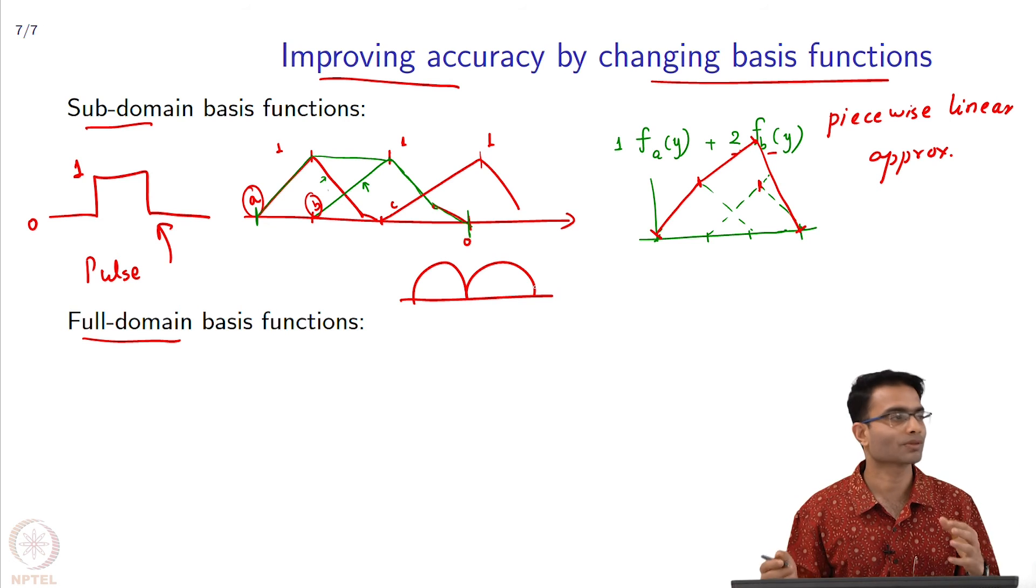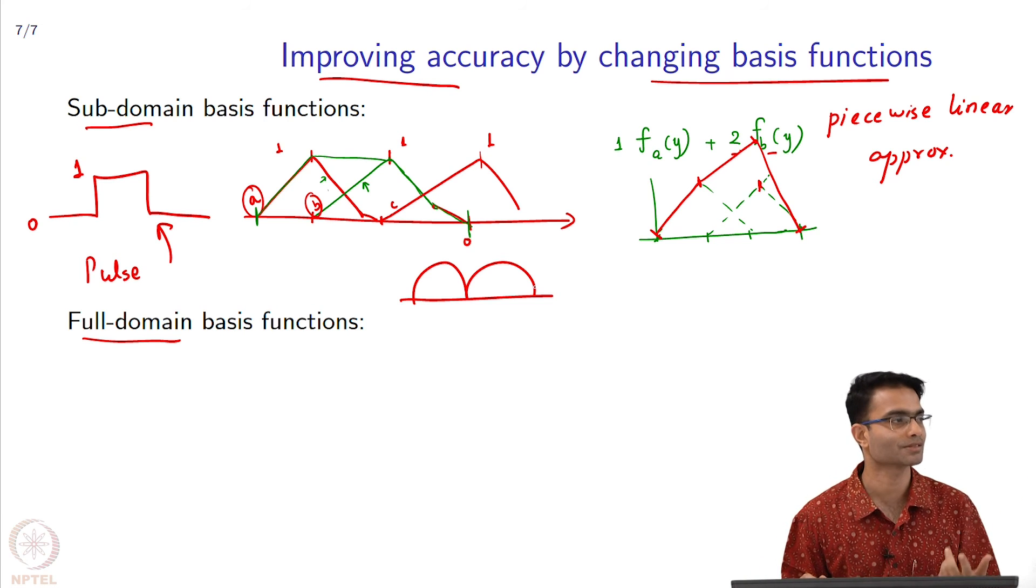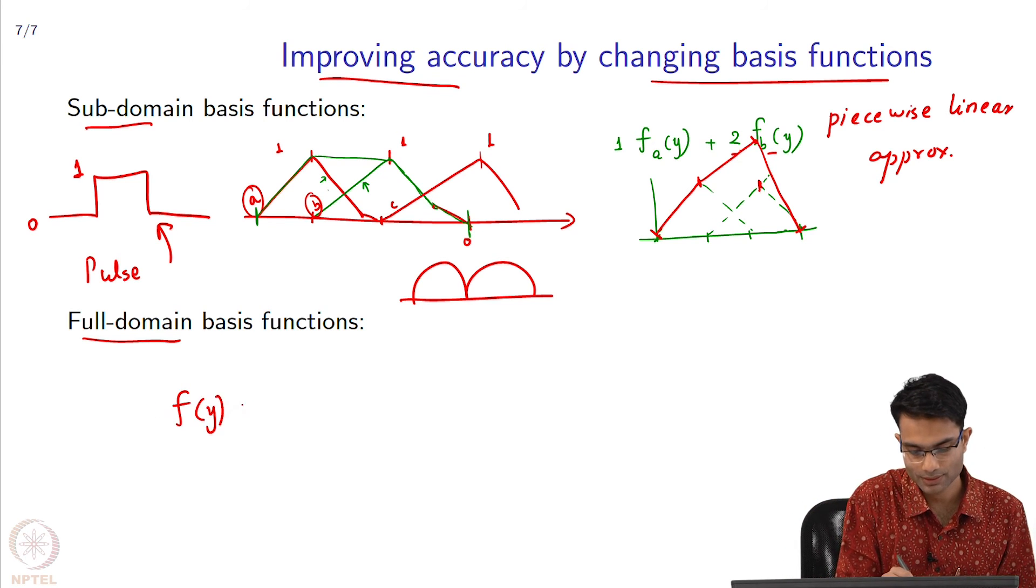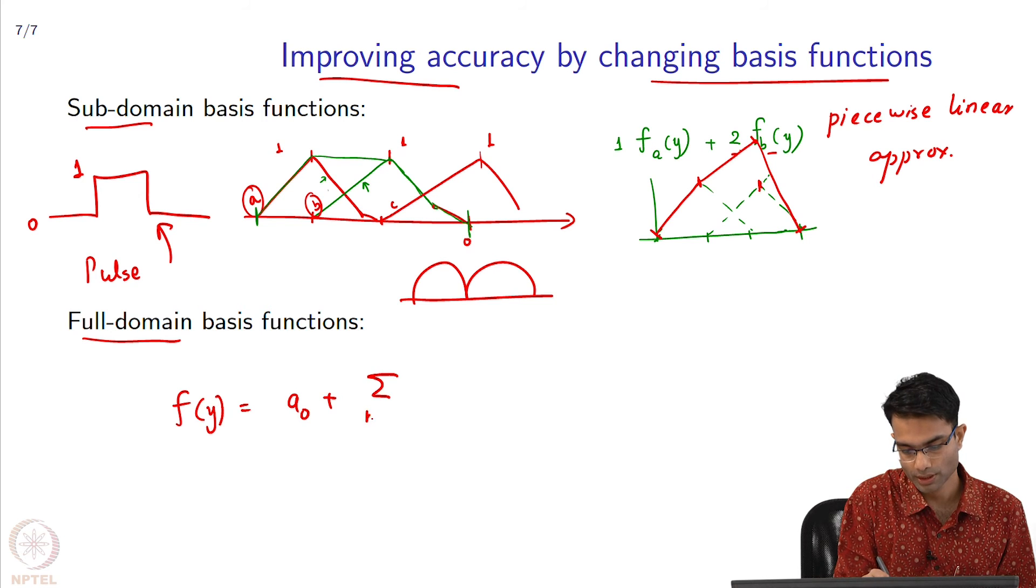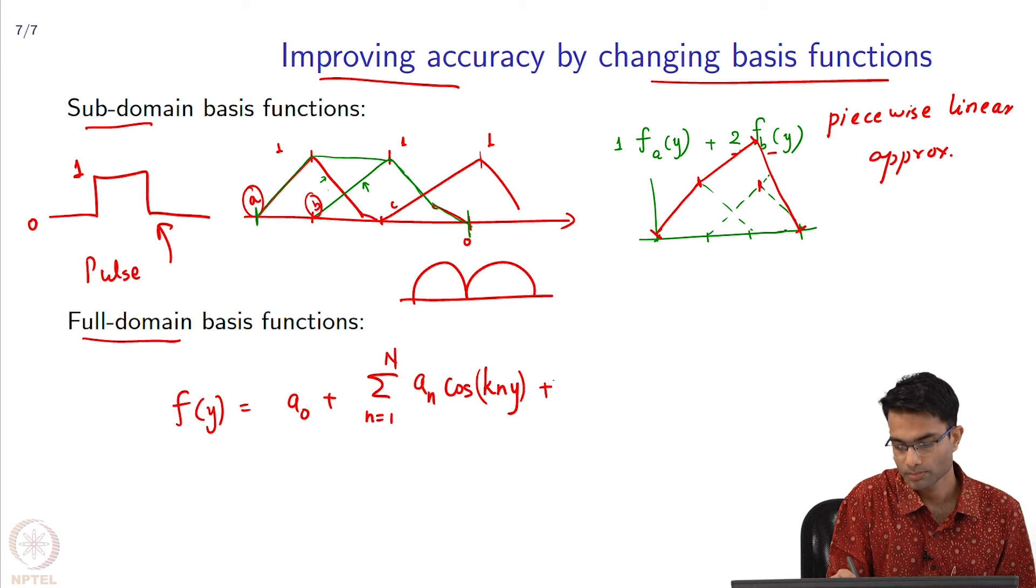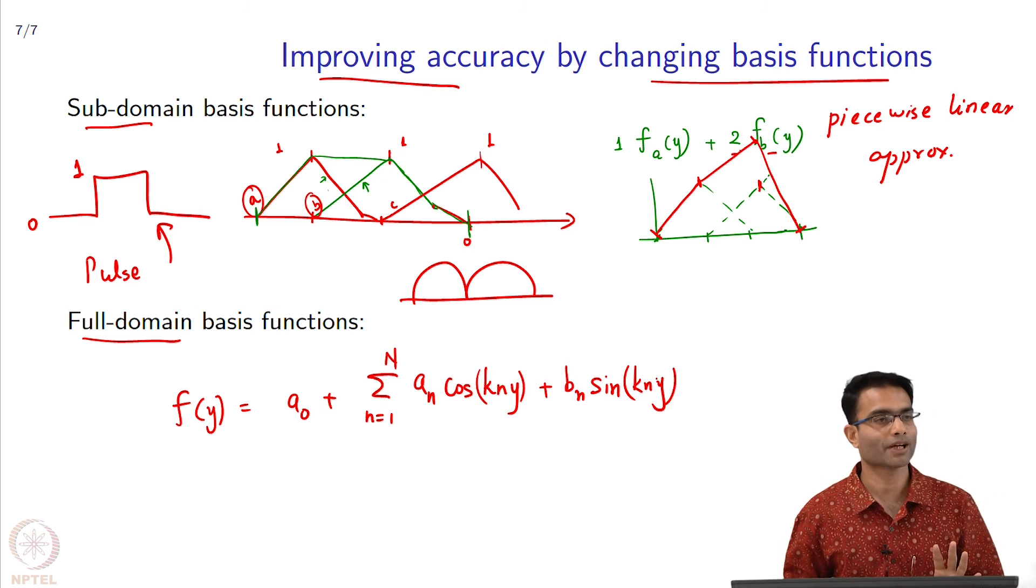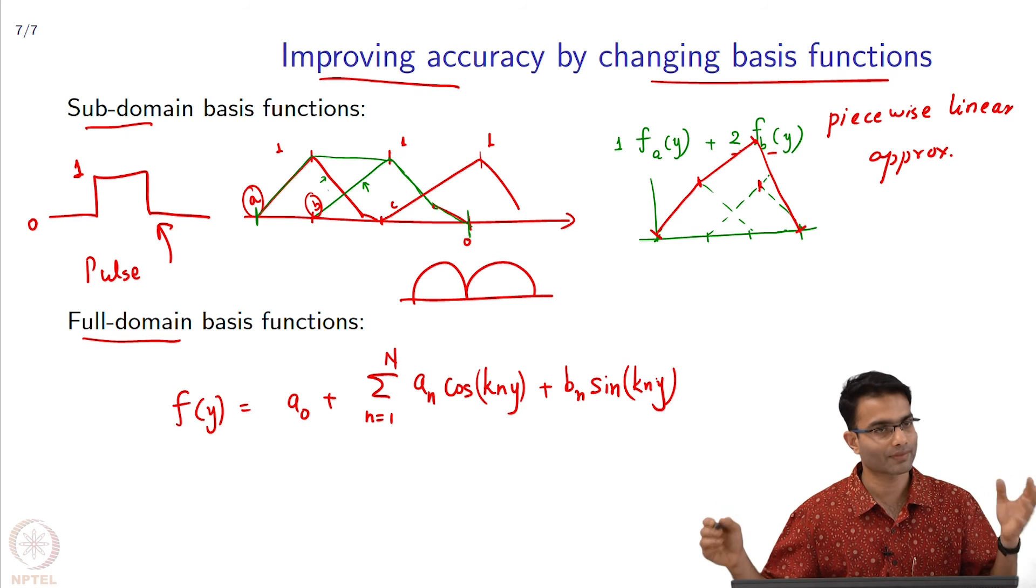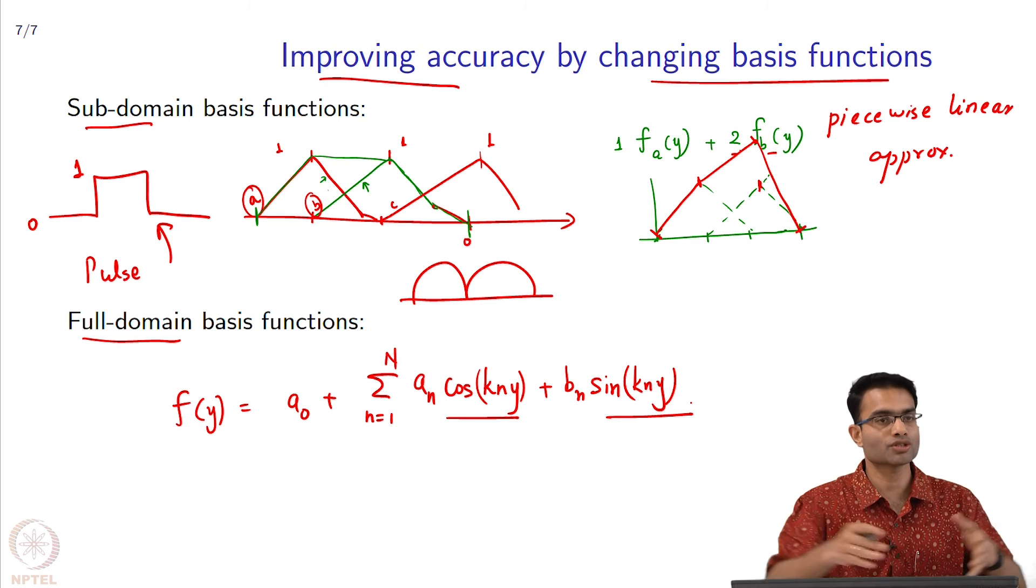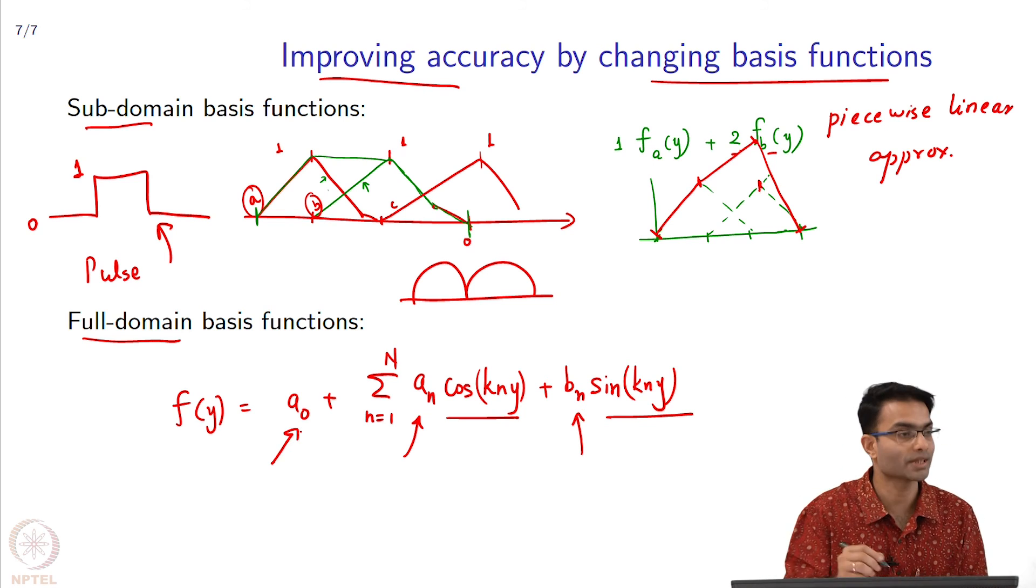What about combination of sines and cos—what are they called? Fourier series. You studied this in first year of signals and systems. If I have some, I can write down my basis function like this: a_0 plus sum from n equals 1 to capital N of a_n cos(k_n y) plus b_n sin(k_n y). Your basis functions now have become this cos and sin. Cos and sin are non-zero everywhere, and now I am representing them by coefficients a_n and b_n, and there is of course a DC term that I have to take care of.